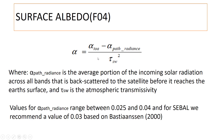Surface albedo is computed as top-of-atmosphere albedo minus path radiance, divided by atmospheric transmissivity squared. Path radiance is the average portion of incoming solar radiation across all bands that is backscattered to the satellite before reaching Earth's surface. Values for path radiance range from 0.025 to 0.204; for SEBAL it is recommended to use approximately 0.03, based on Bastiaanssen.